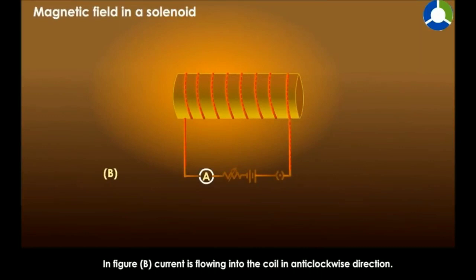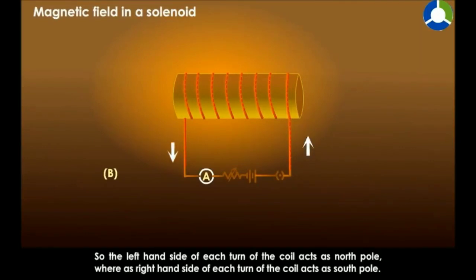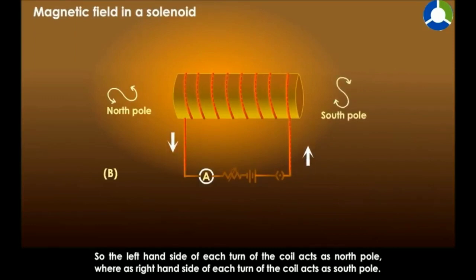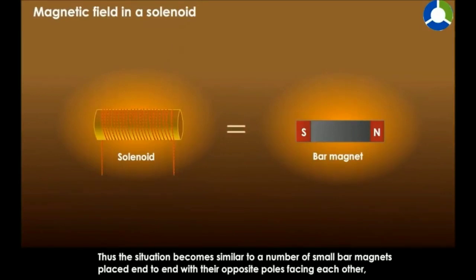Where the current enters and flows in a clockwise direction, it makes a south pole. The other end, from where current comes out, makes a north pole. If we reverse the polarity, the opposite side becomes the south pole and the other becomes the north pole. If we ignore the intermediate north and south poles, this solenoid behaves as a bar magnet. The magnetic field lines will be similar to those of a bar magnet.